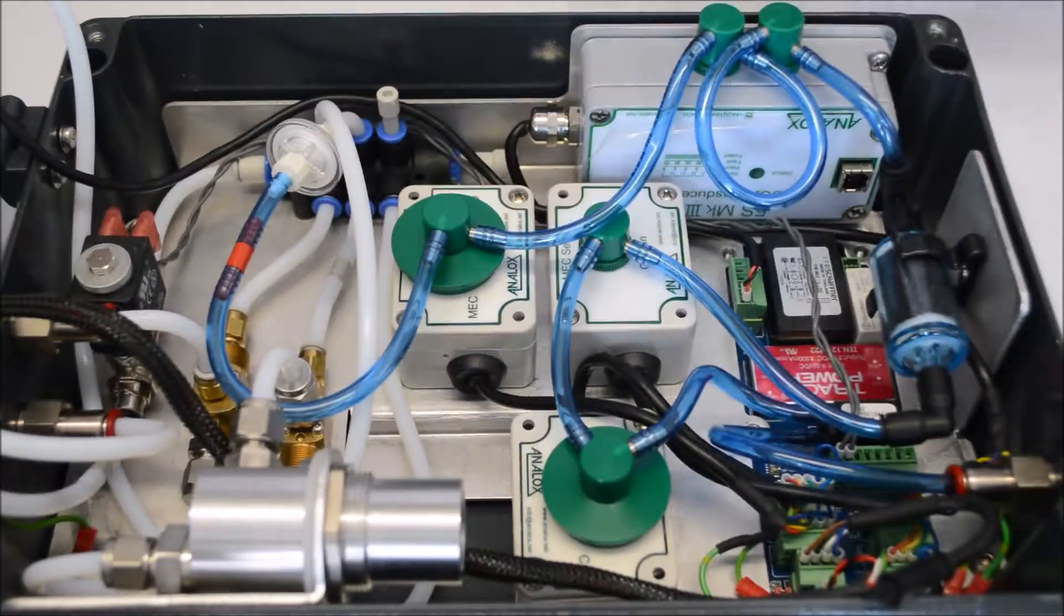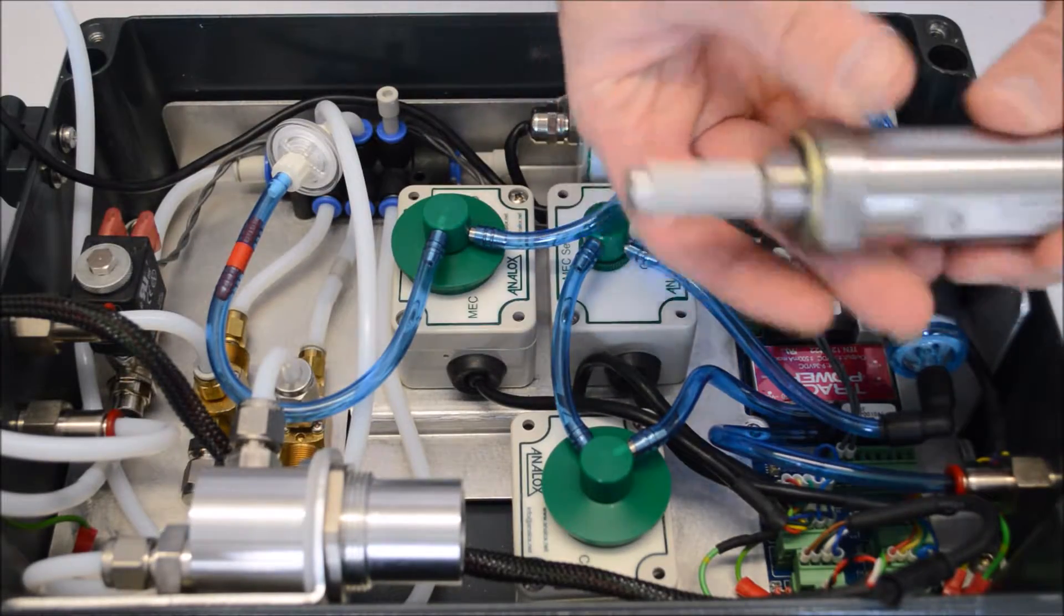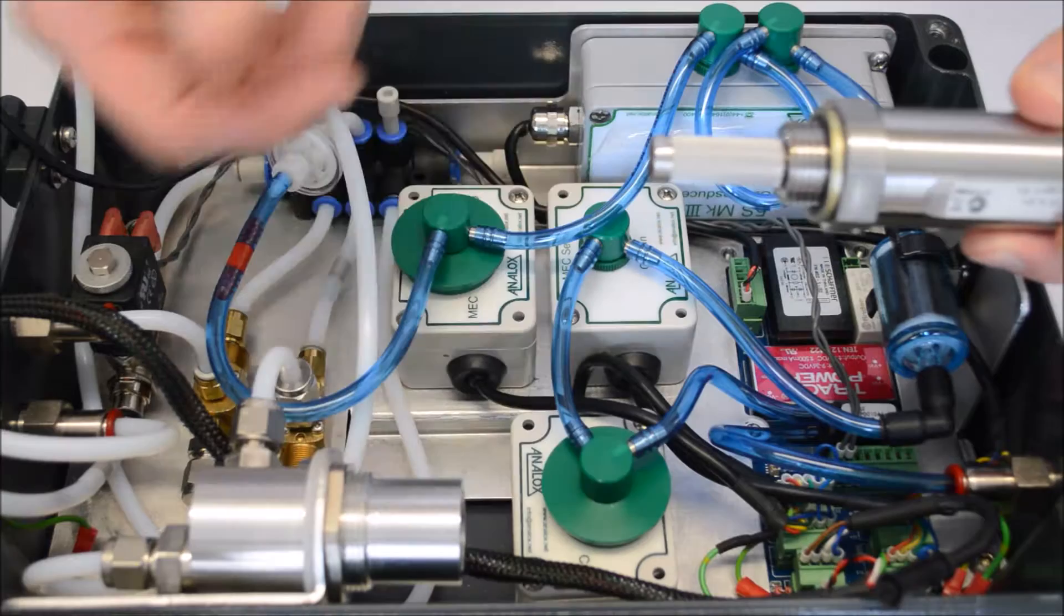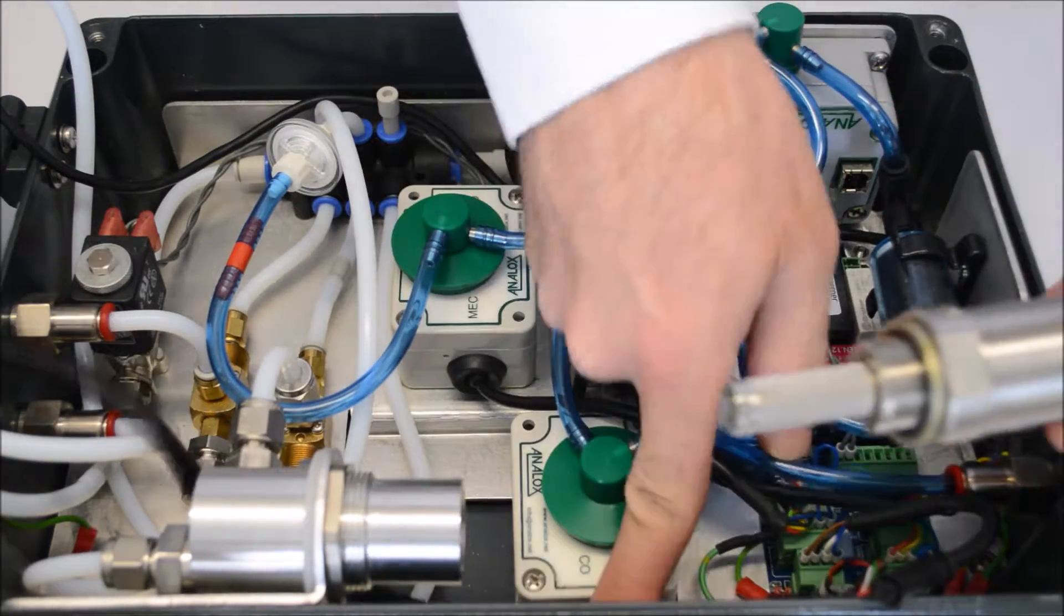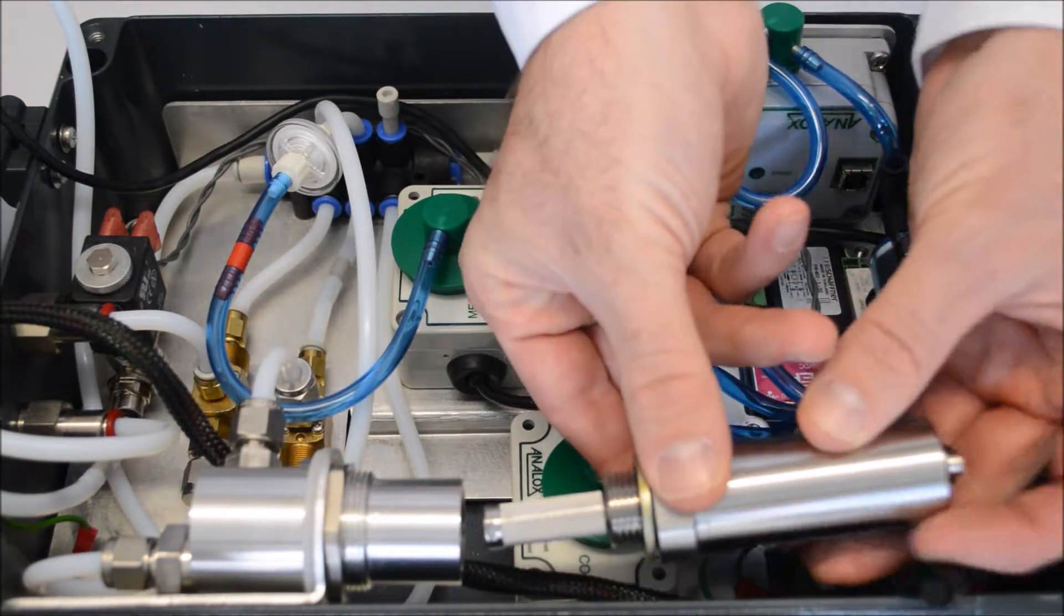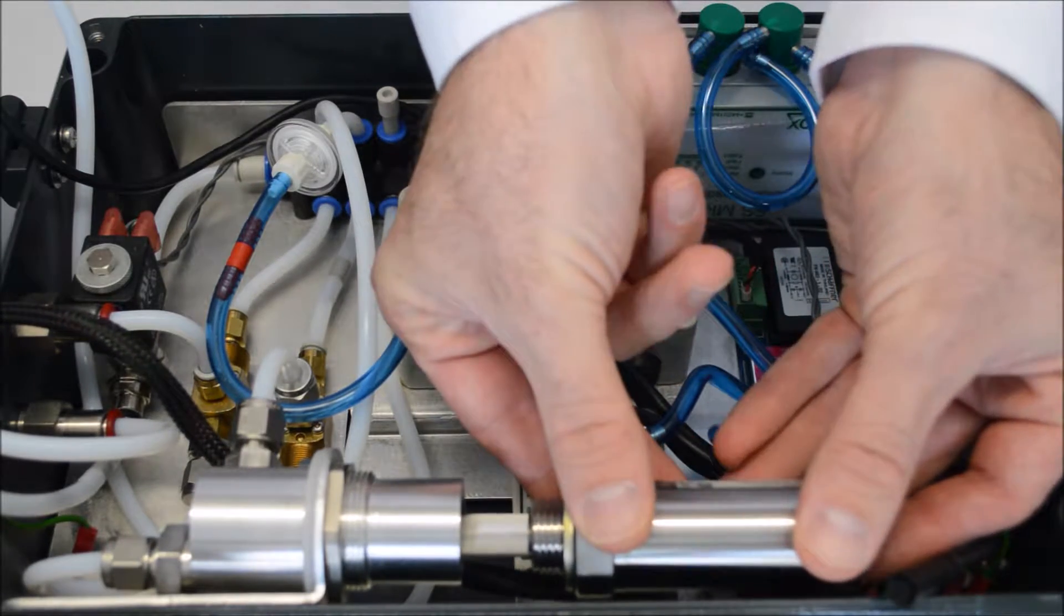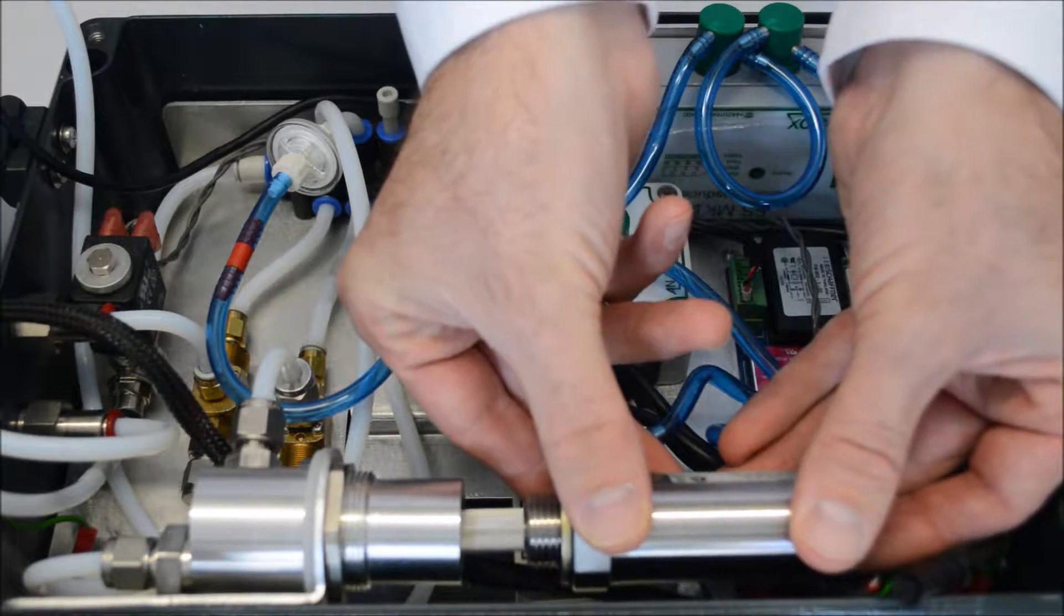Replace with the dew point sensor which you will have received from Analox. It will come with a plastic cover. You need to remove the plastic cover and insert it into the housing where you removed the old dew point sensor. Take care while doing this because it is quite a sensitive piece of equipment.